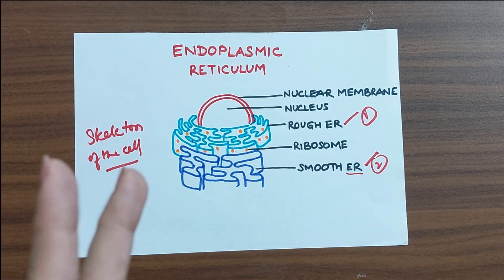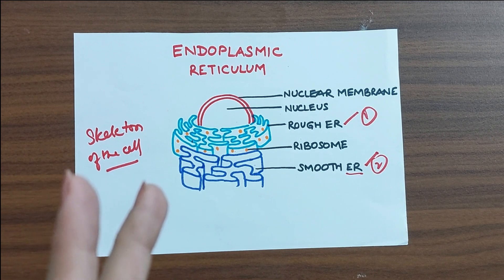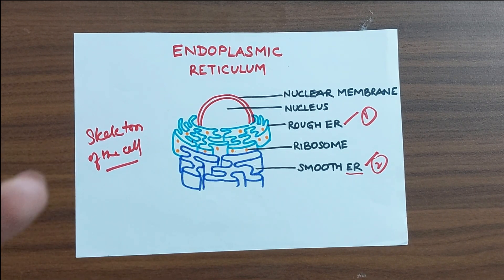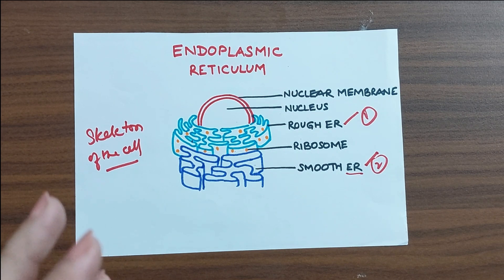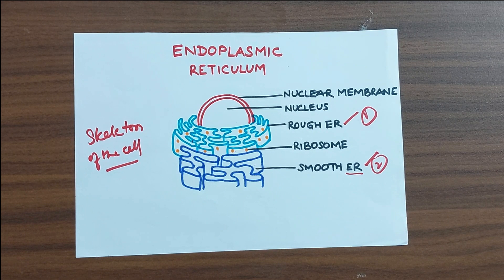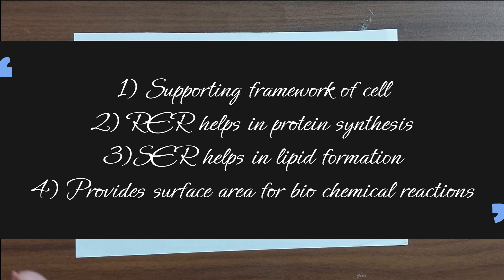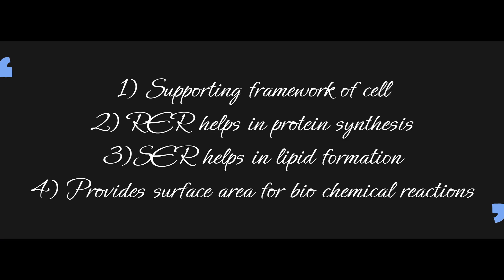So functionally, endoplasmic reticulum forms the supporting framework of the cell. And the rough endoplasmic reticulum, since it contains ribosomes, helps in protein synthesis. And these proteins could either be used for making different parts of the cells or they may also be used as enzymes or hormones. The smooth endoplasmic reticulum secretes lipids. Now, endoplasmic reticulum being a network of membranous structure, it helps to provide an expanded surface area. So a lot of biochemical reactions can also happen on the endoplasmic reticulum. So basically four functions: supporting framework of the cell, rough ER helps in making proteins, smooth ER secretes lipids and ER provides an expanded surface area for biochemical reaction.